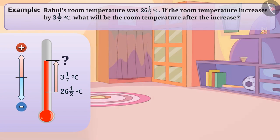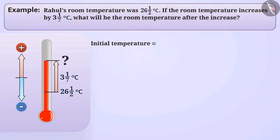The example shows that the initial temperature is equal to 26, 1 by 2 degree Celsius. We can say that the temperature has increased by 3, 1 by 7 degree Celsius. In this way, to find the temperature after the room temperature changes, we need to add the increase in the initial temperature.